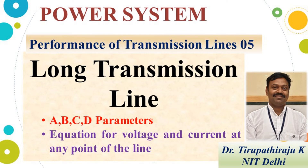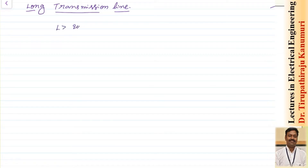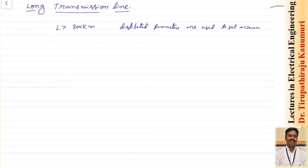Today we are going to discuss about long transmission lines. We know that if the length is greater than 200 kilometers, then it is better to use distributed parameters. Distributed parameters are used to get more accuracy, because the parameters keep changing at every point of the transmission line. If lumped parameters are taken, there is a chance of some error. So for analysis, let us take the basic conditions to follow so that the analysis will be easy.